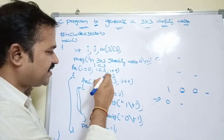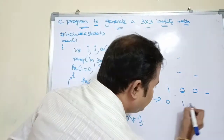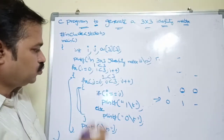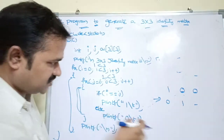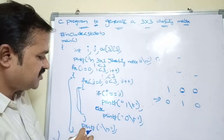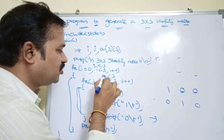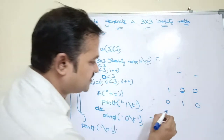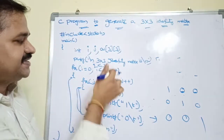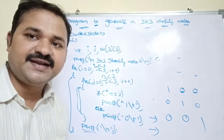j becomes 3; 3 < 3 is false, so the control comes out of the j-loop. printf("\n") moves the cursor to a new line. i becomes 2; 2 < 3 is true. j=0: 2 == 0 is false, so 0 is printed. j=1: 2 == 1 is false, so 0 is printed. j=2: 2 == 2 is true, so 1 is printed. j becomes 3; 3 < 3 is false, printf("\n") is executed. i becomes 3; 3 < 3 is false, so the loop ends.